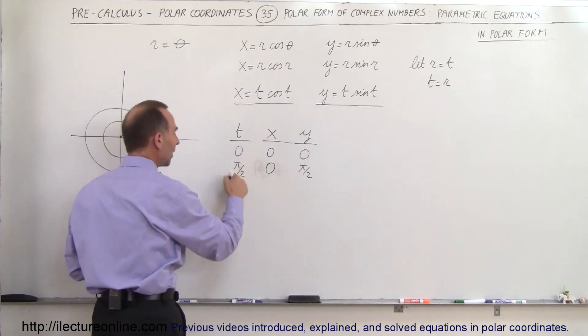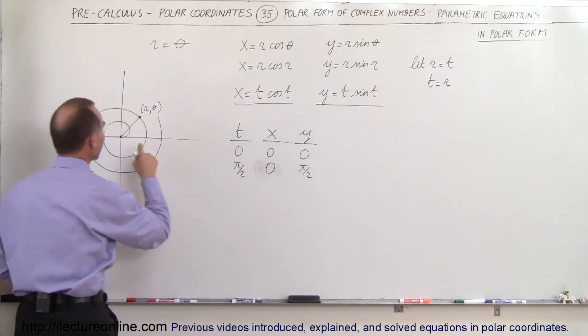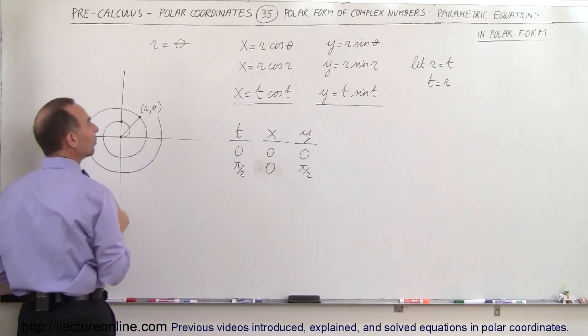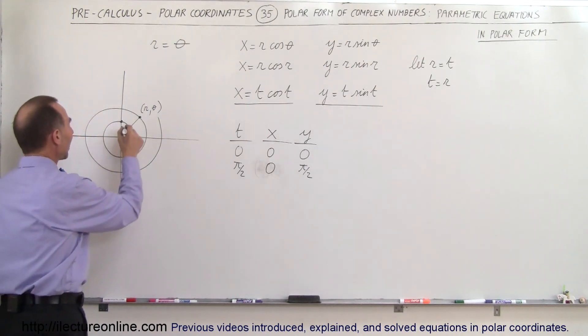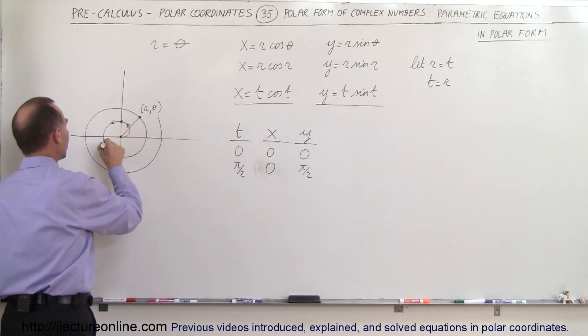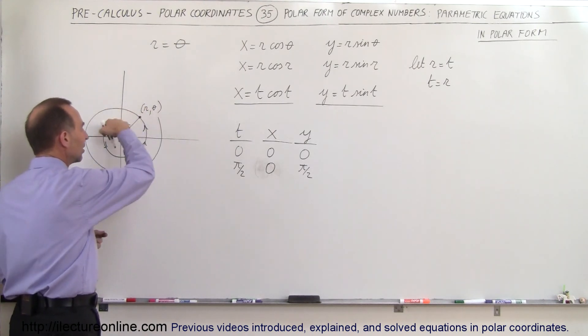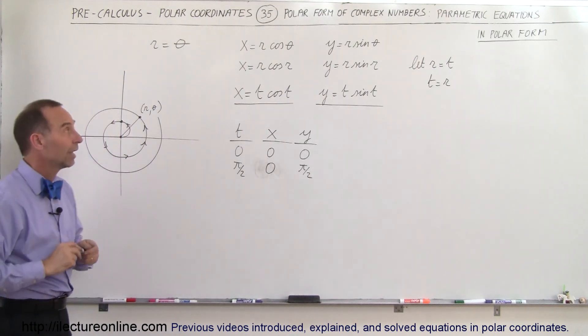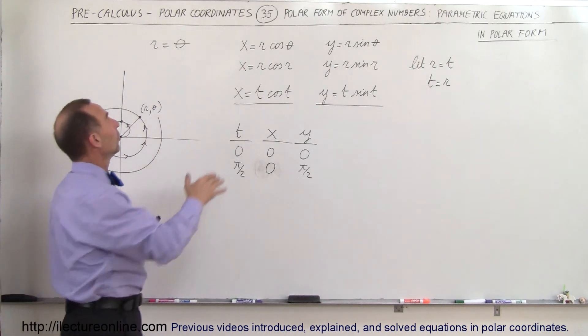So after this much time has elapsed, the particle will now be at zero for x, and it would be right here at pi over two for y. As you can see, as time goes by, the particle will simply be continuing along its path around there, give it a particular time for t, and it will give you a particular position for the particle.